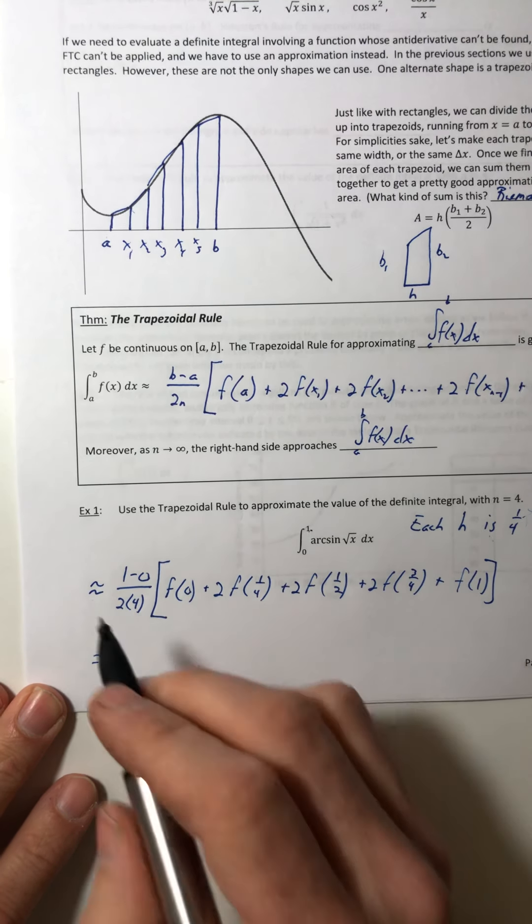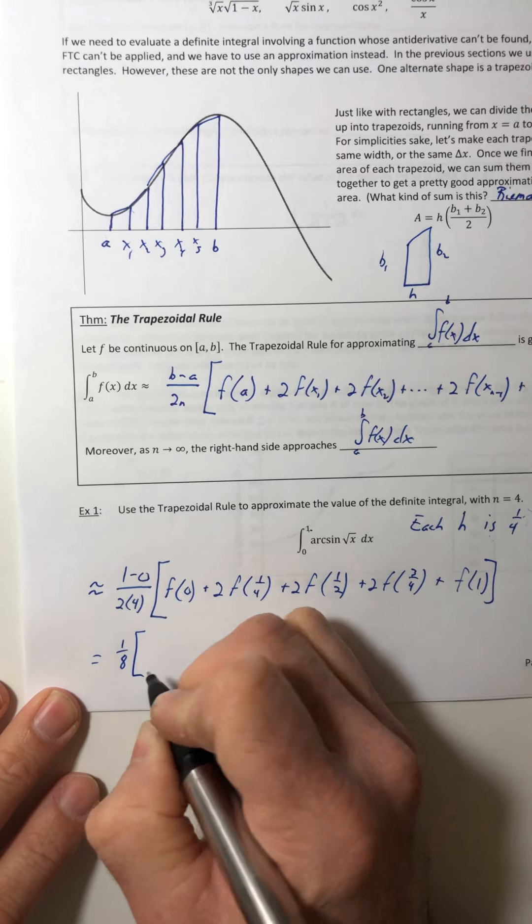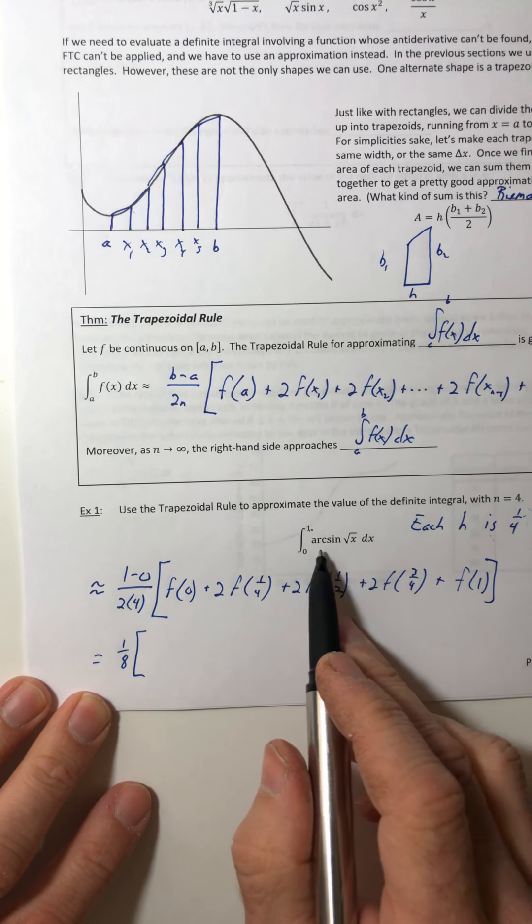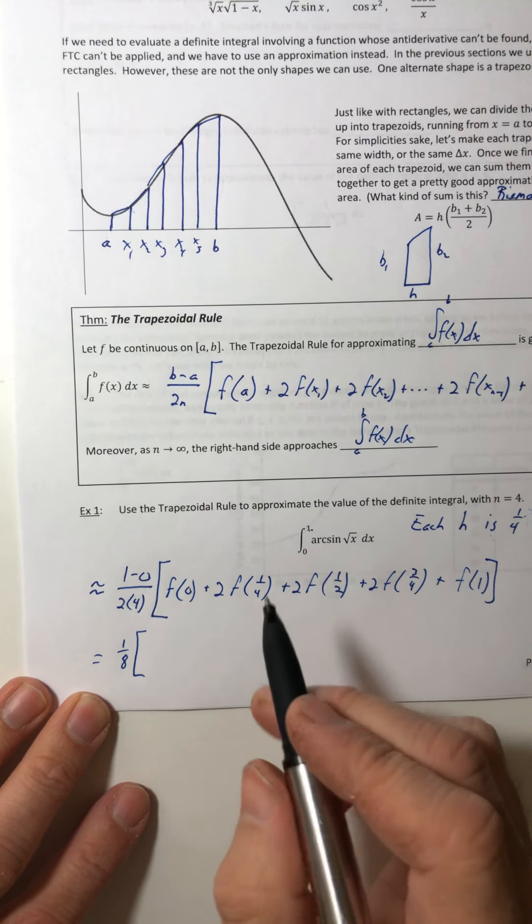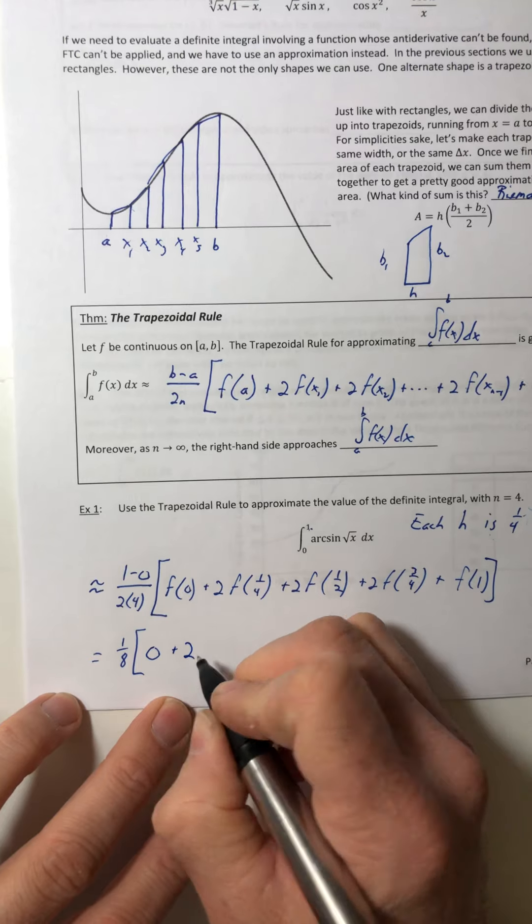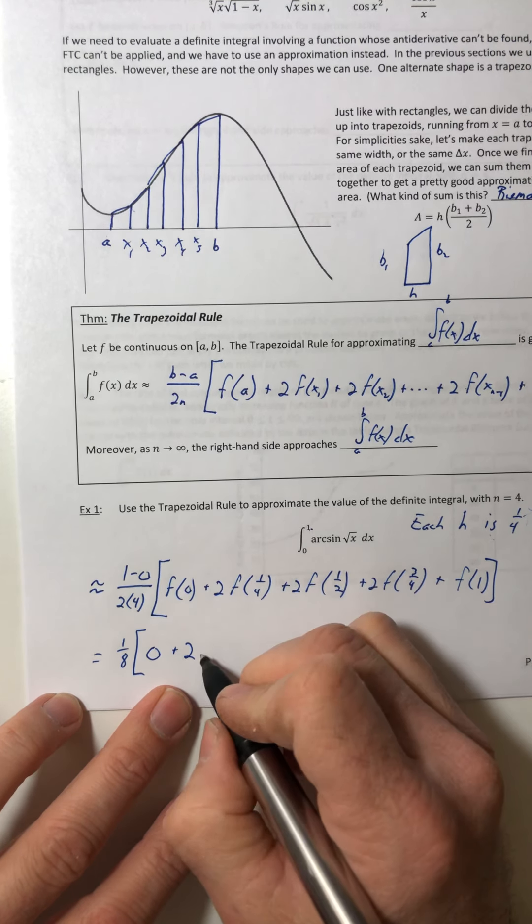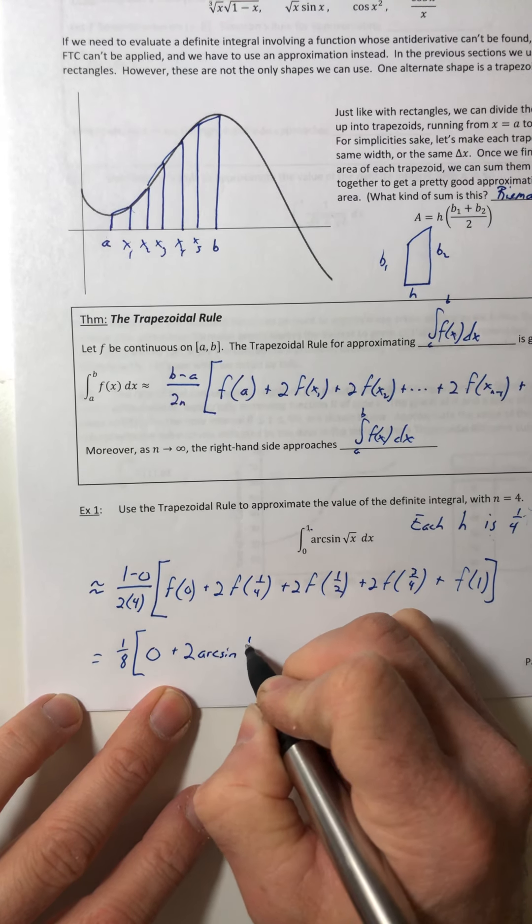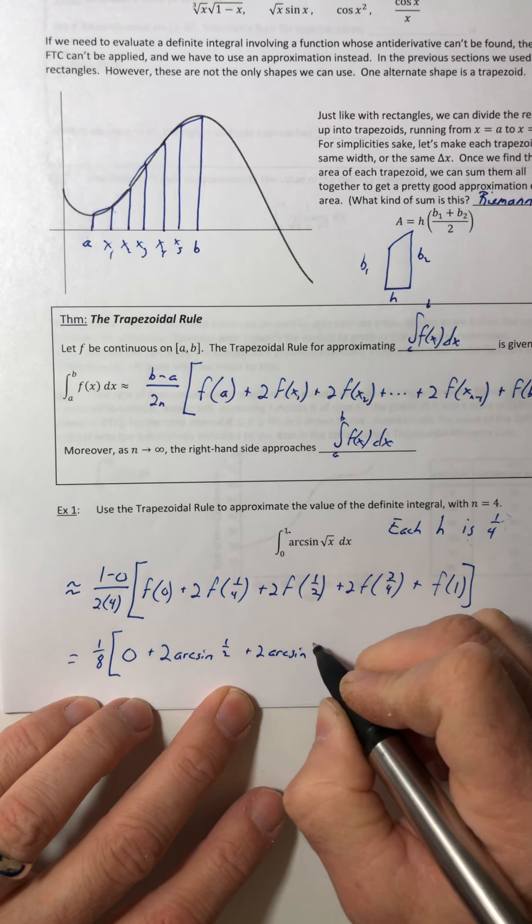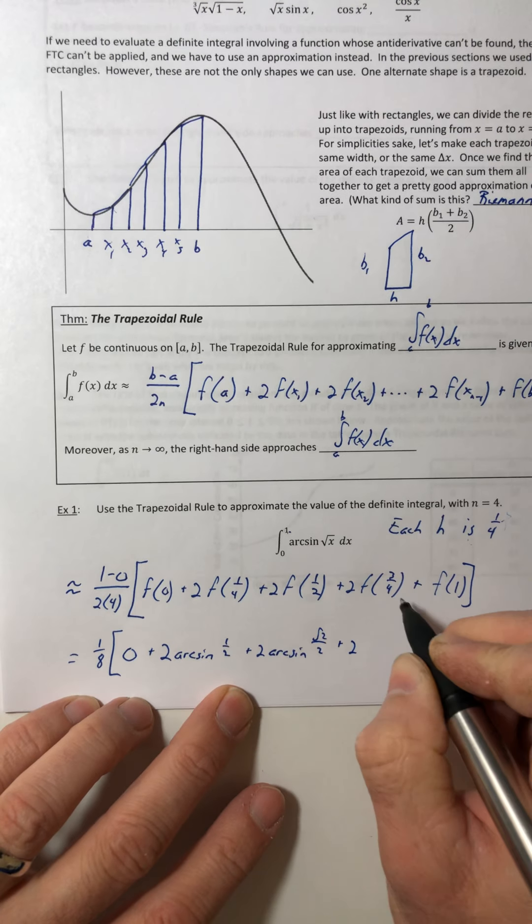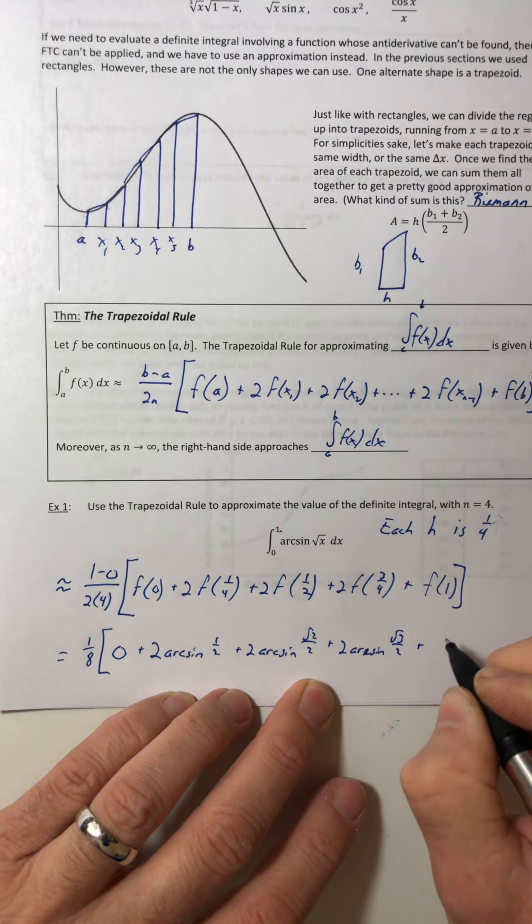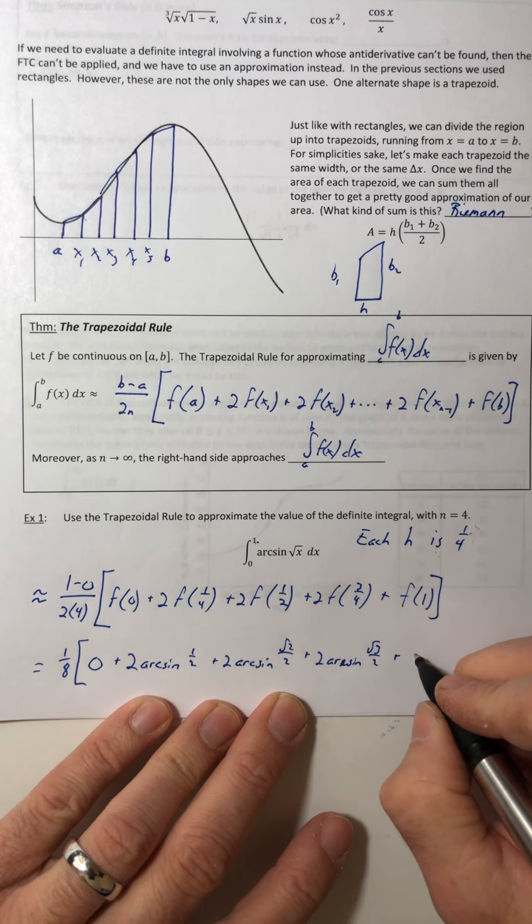Okay and then from here you just got to evaluate stuff. So one eighth, f of zero, you're going to plug that into the function inside, don't integrate it, don't do derivative, just take the function plug the number in. So arc sine of zero, that is zero, plus two, plug in the fourth and you end up with arc sine of a half. Plug in the half and you get arc sine of root two over two. Plug in the three fourths, arc sine of root three over two, and then plug in the one, it's arc sine of one.